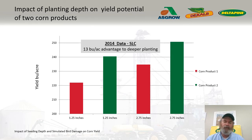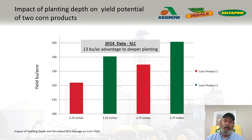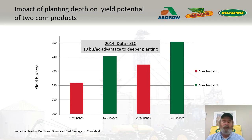Another test we have done with planting depth over the years was a rather extreme case where we planted an inch and a quarter versus two and three quarters deep. Two and three quarters is very uncomfortable, particularly to an old cotton person like myself. But this was in the absence of birds. Across the two products we evaluated, there was a 13 bushel advantage to planting deeper — that's the agronomic gain from better rooting, better standability, and better uptake of water and fertilizer. We have to make a sacrifice somewhere between getting a stand and all the other agronomic things depth influences.